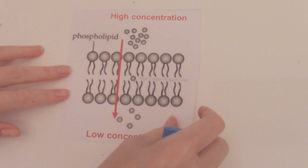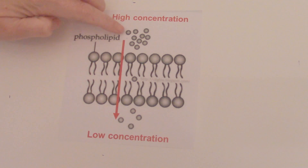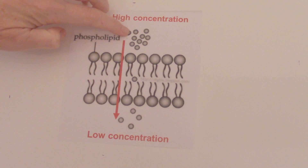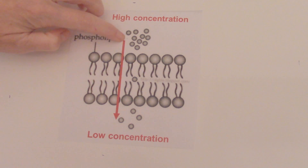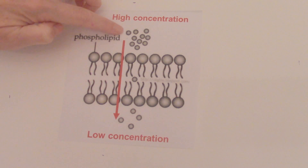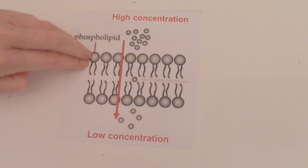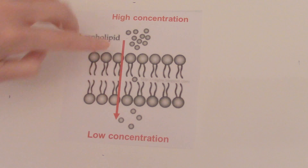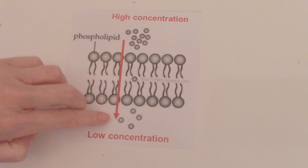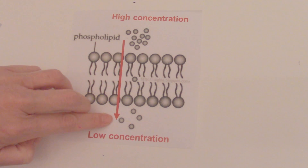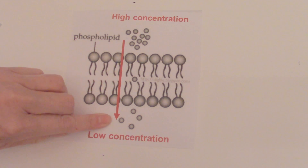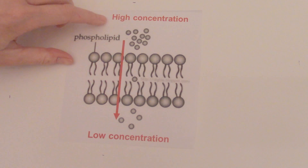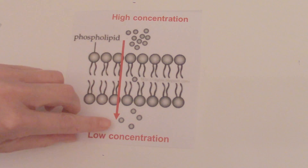Here we see a bunch of solutes on one side, and fewer on the other. Where we see many solutes, that's the area of high concentration. These solutes want to reach equilibrium, so they diffuse through the phospholipid bilayer — our cell membrane — moving into or out of the cell depending on where concentration is lowest, in order to reach equilibrium. The molecules move from high concentration to low concentration.